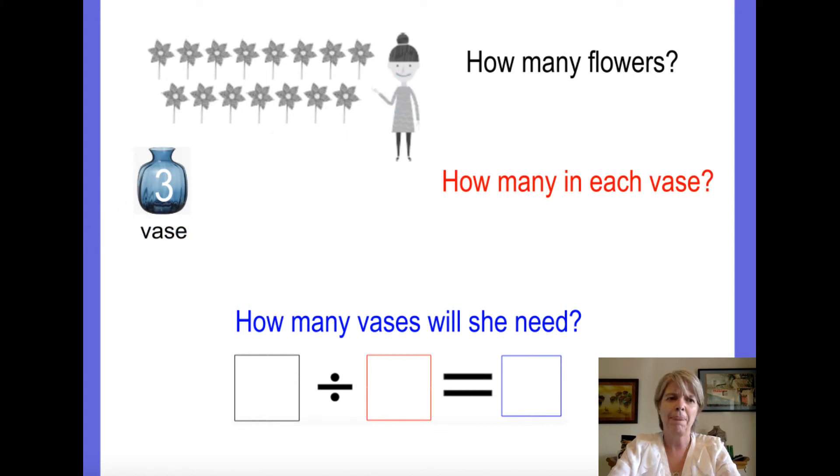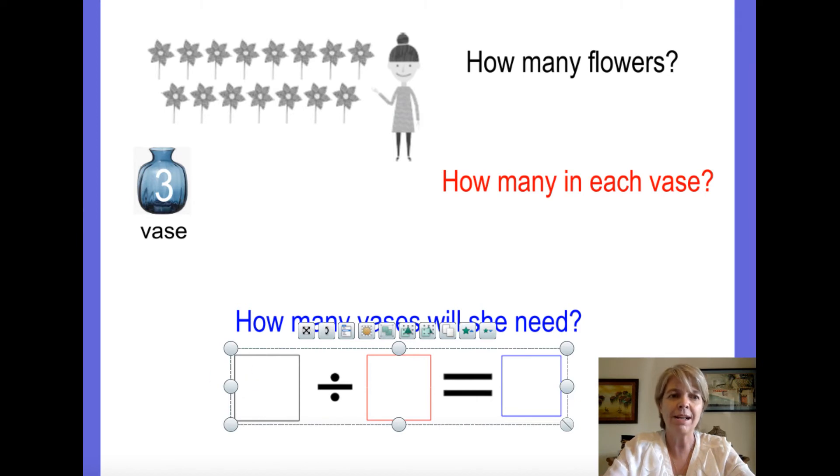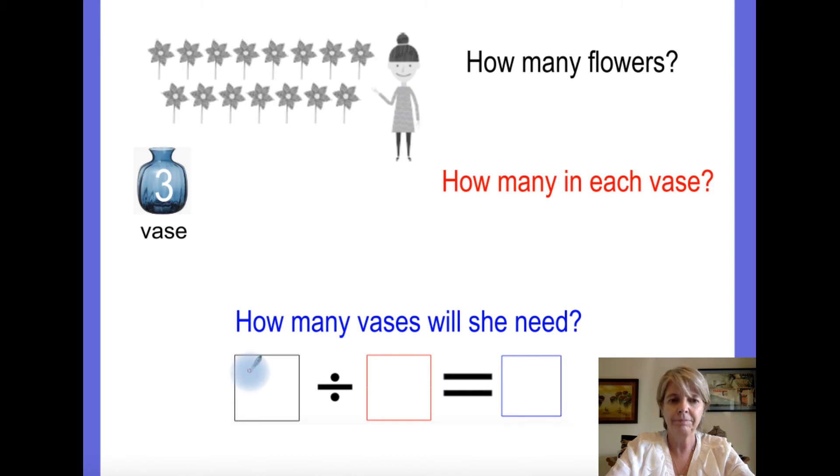Let's count in twos. Two, four, six, eight, ten, twelve, fourteen, and one more. Fifteen. So she has fifteen flowers. So I'm going to write the number fifteen here. Fifteen. To help me remember, she has fifteen flowers.